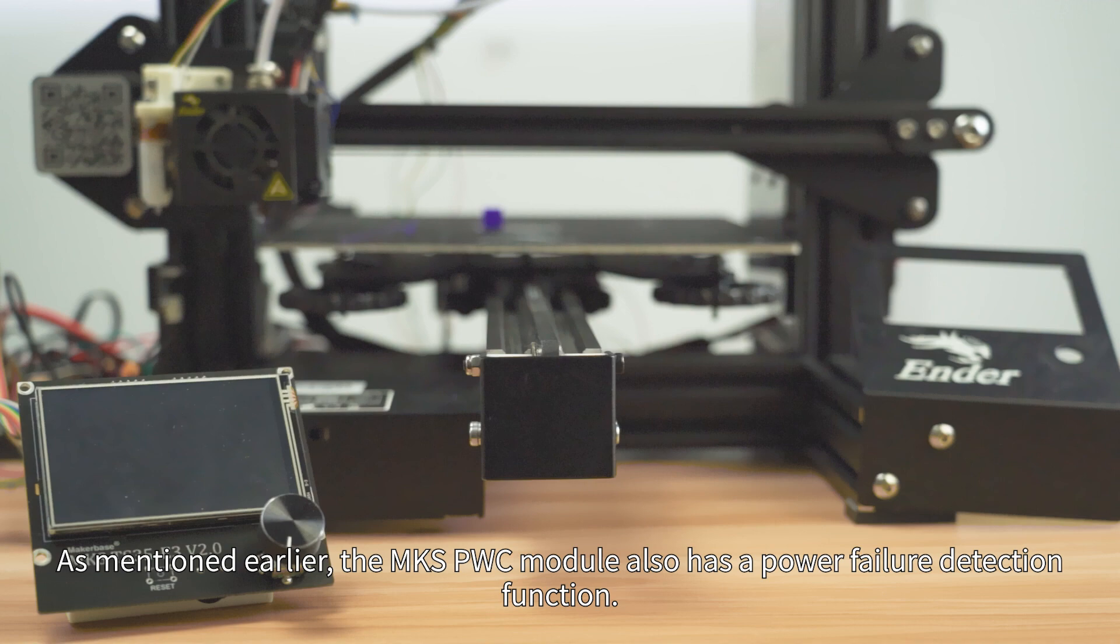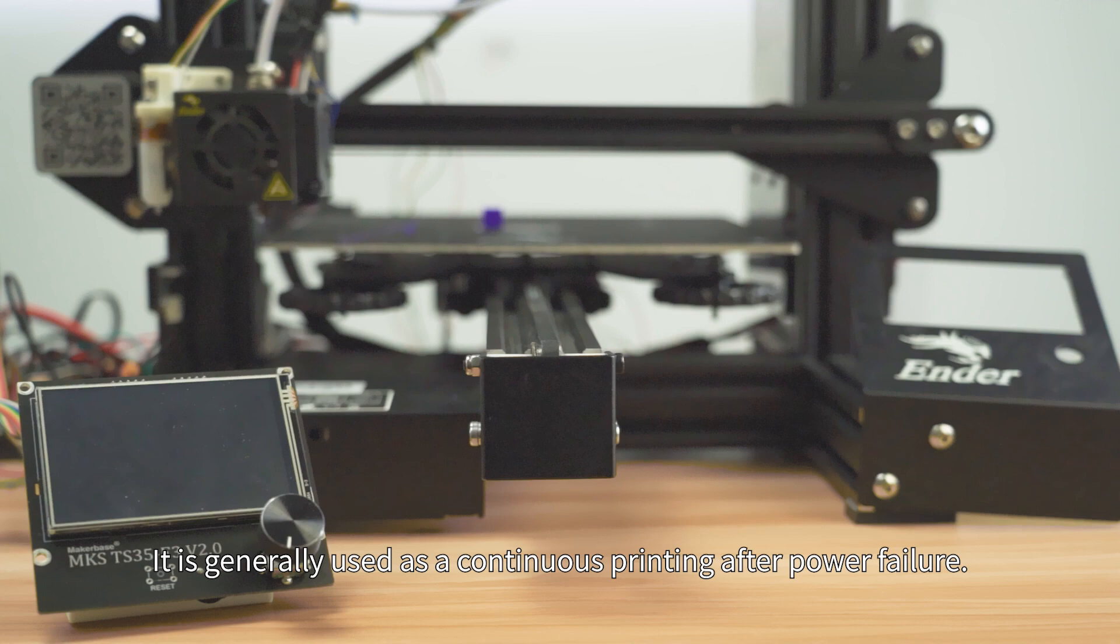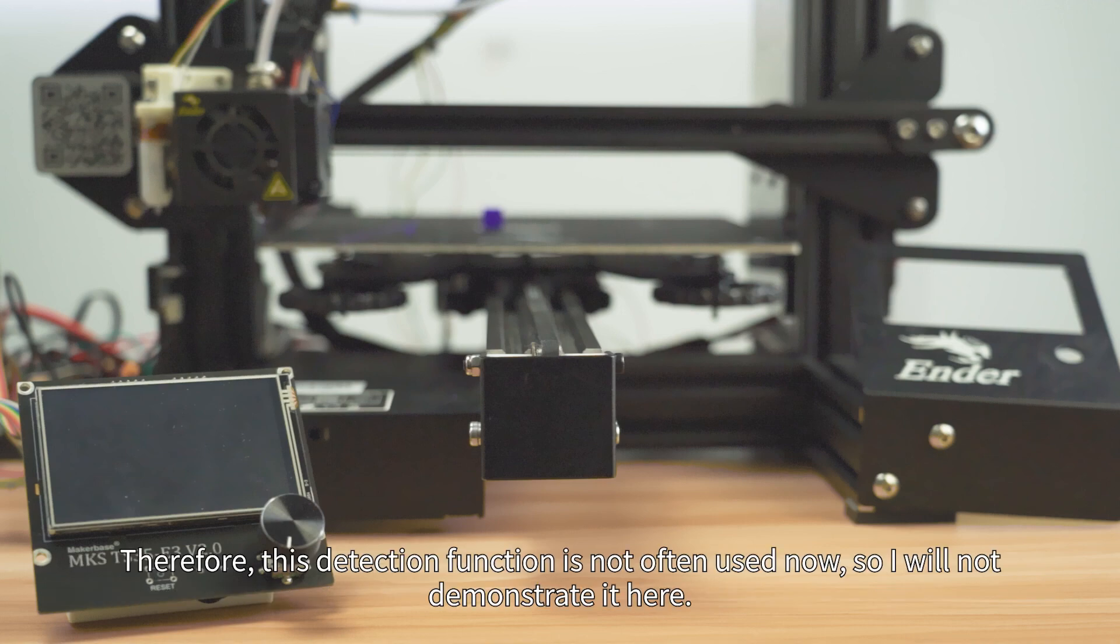As mentioned earlier, the MKS-PWC module also has a power failure detection function. In fact, it will generate a high level on the PWDDT pin after detecting the external power supply is disconnected. It is generally used for continuous printing after power failure. But at present, more users use Marlin firmware, which continues printing after power failure by continuously saving printing information to the SD card. Therefore, this detection function is not often used now, so I will not demonstrate it here.